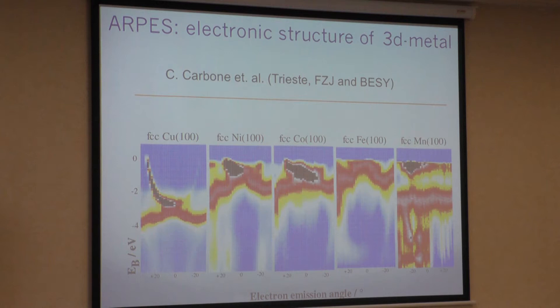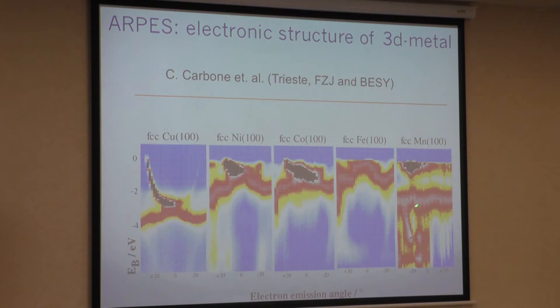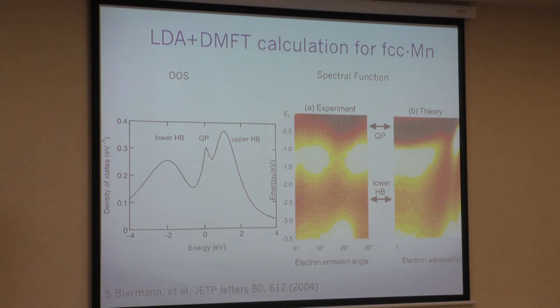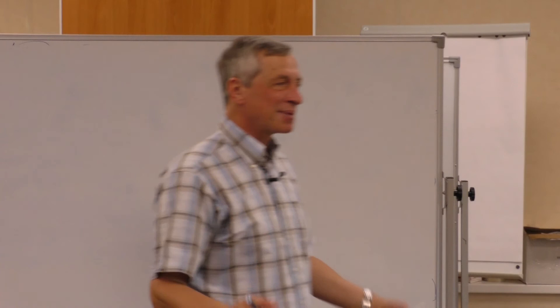This is the same experiment from Carlo Carbone, showing all transition metals from copper — where the D-band is completely filled — through to manganese. The D-band approaches the Fermi level as you go across the series. The most strange object is manganese, which has an almost non-dispersive band. When we discussed this with him long ago, we identified it as a lower Hubbard band. Zülke Berman did an LDA+DMFT calculation as a PhD project and almost found these non-dispersive lower Hubbard bands, which matches the experiments.